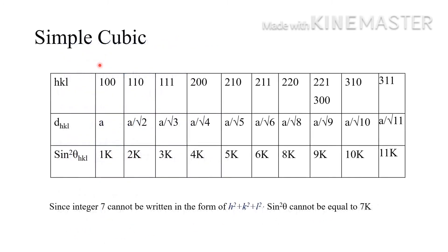Now we will learn which planes are present for simple cubic, body centered cubic, and face centered cubic crystals. For a simple cubic, all integers satisfying h² + k² + l² are present. The hkl values are: 100, 110, 111, 200, 210, 211, 220, 221 (or 300), 310, 311, etc.